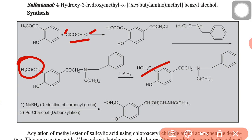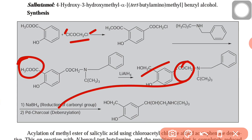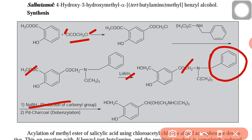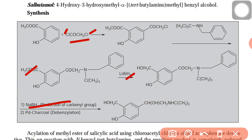Further reduction happens to reduce this particular group with sodium borohydride. Lithium aluminum hydride reduces the ester; sodium borohydride further reduces the keto group. Then finally, de-benzylation occurs — the benzyl group C6H5CH2 is removed — and that gives salbutamol.